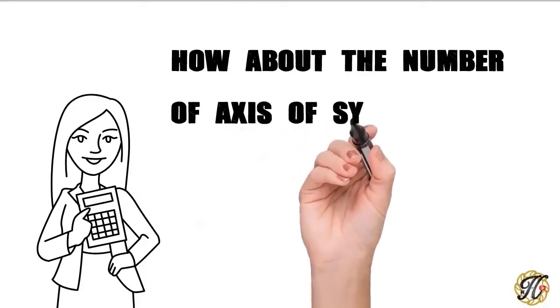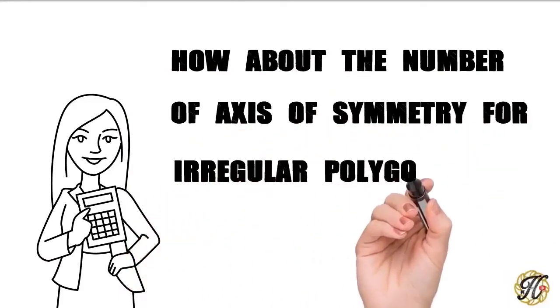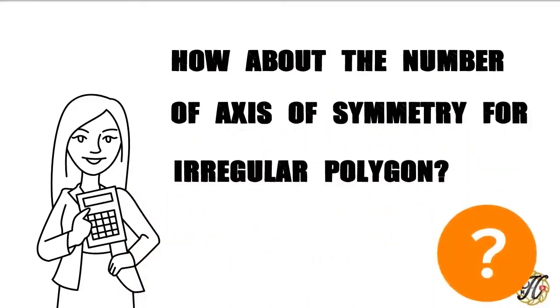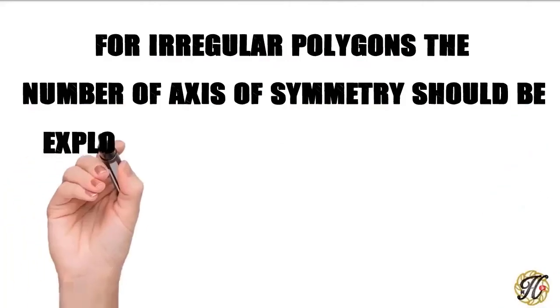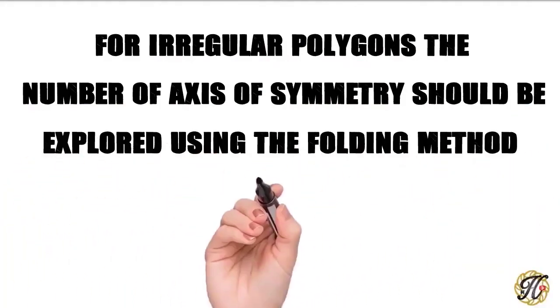How about the number of axis of symmetry for irregular polygons? For irregular polygons, the number of axis of symmetry should be explored using the folding method.